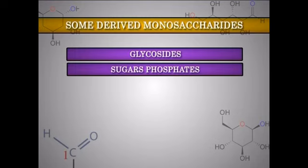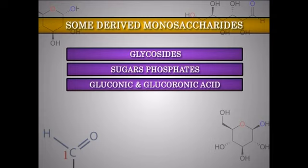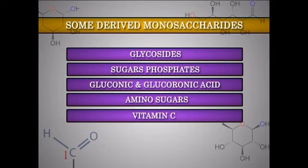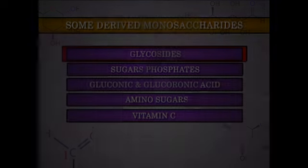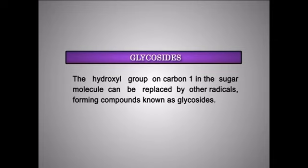Some derived monosaccharides. Derived monosaccharides differ from normal monosaccharides with respect to aldoses and ketoses. They include the glycosides, sugar phosphates, gluconic acids, glucuronic acids, amino sugars, and vitamin C. Glycosides: the hydroxyl group on carbon-1 in the sugar molecule can be replaced by other radicals, forming compounds known as glycosides.